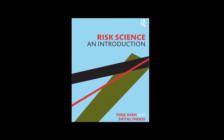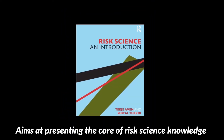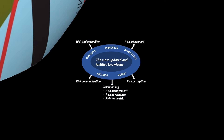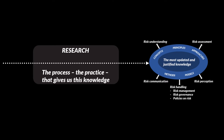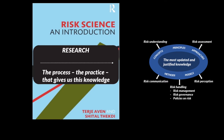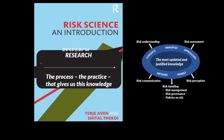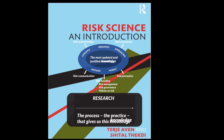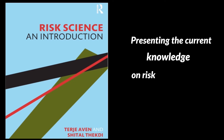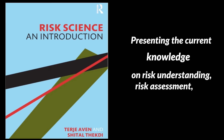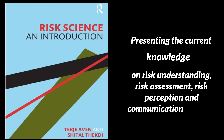The Risk Science book aims at presenting the core of this knowledge. Risk Science is also about the process, the practice that gives us this knowledge. And research is a key aspect of this process. The present book discusses to some extent this aspect of Risk Science, but its main scope and focus is on presenting the current knowledge on risk understanding, risk assessment, risk perception and communication, and risk handling.